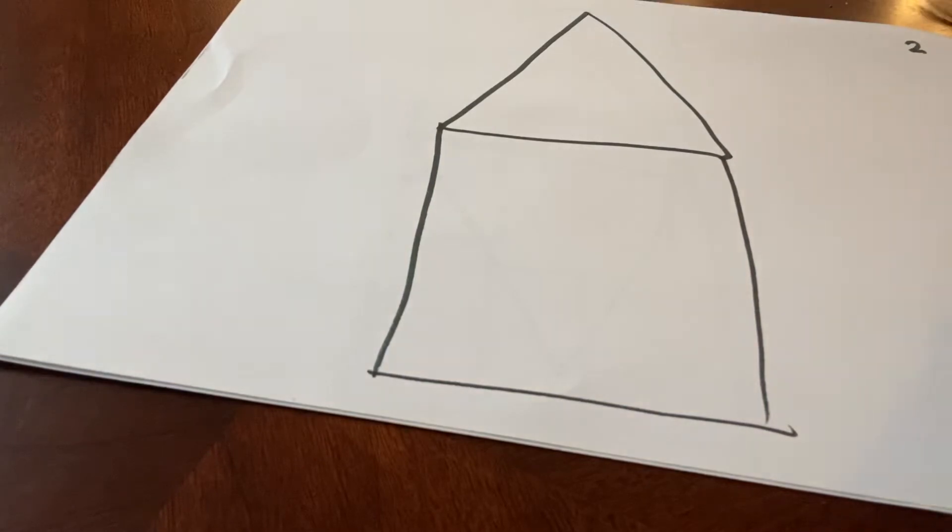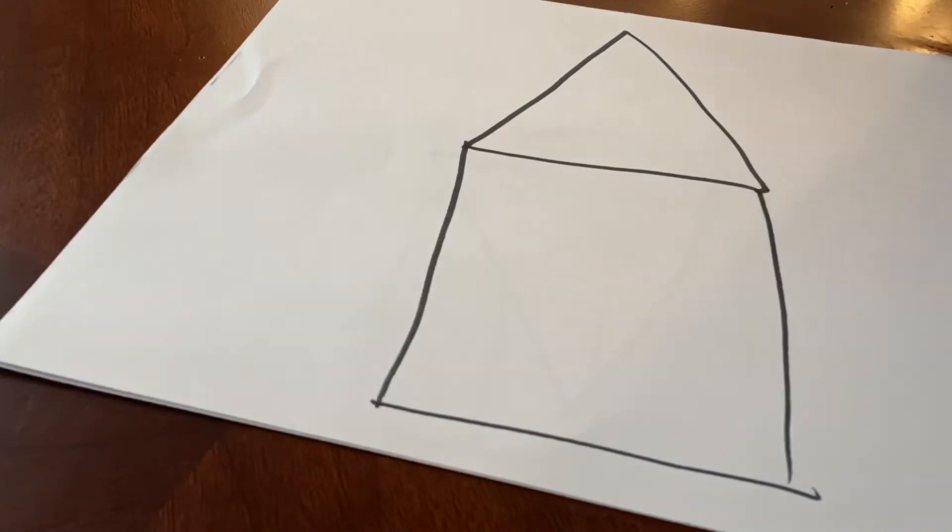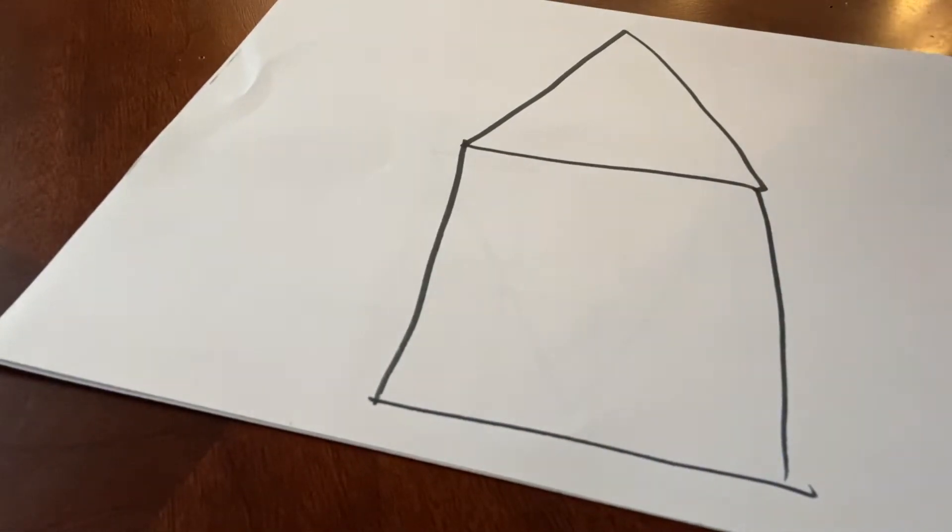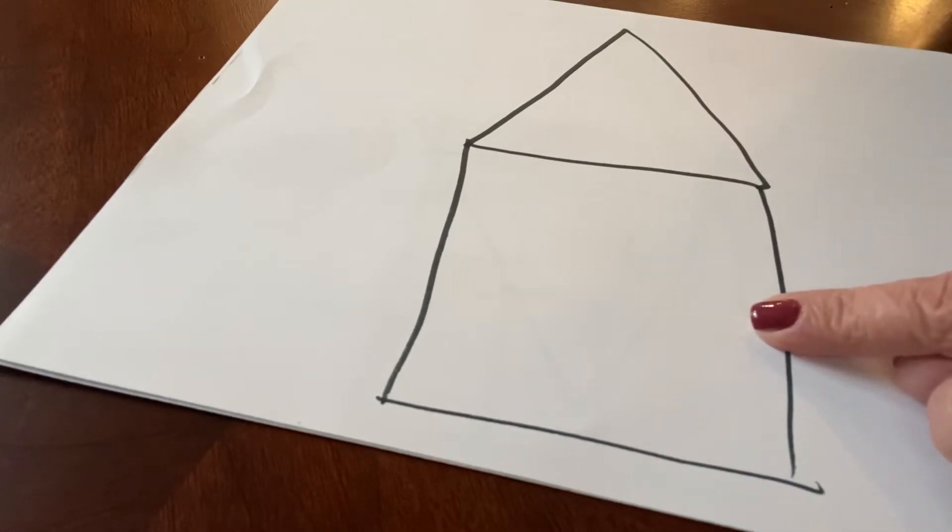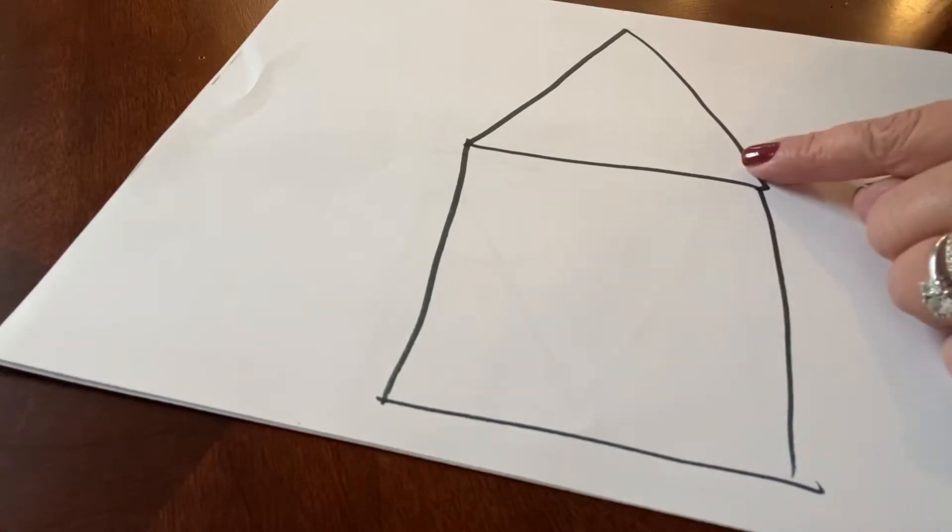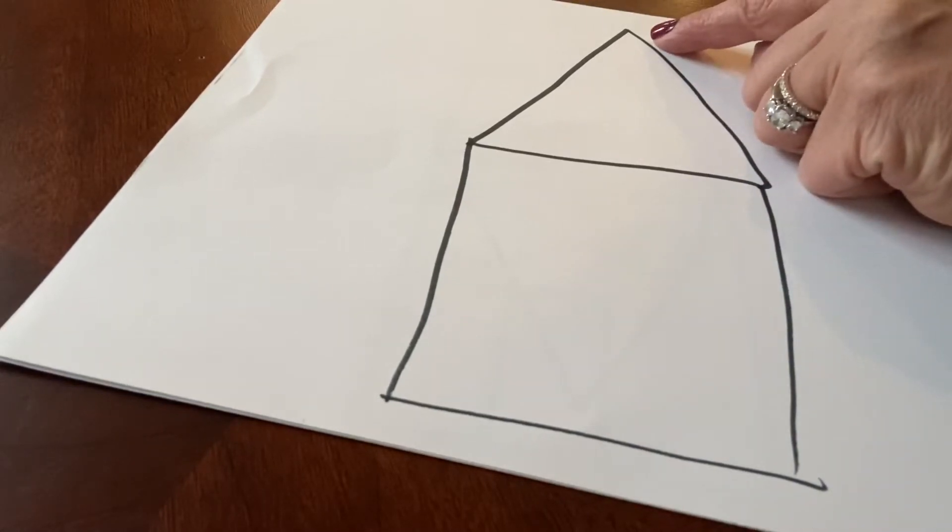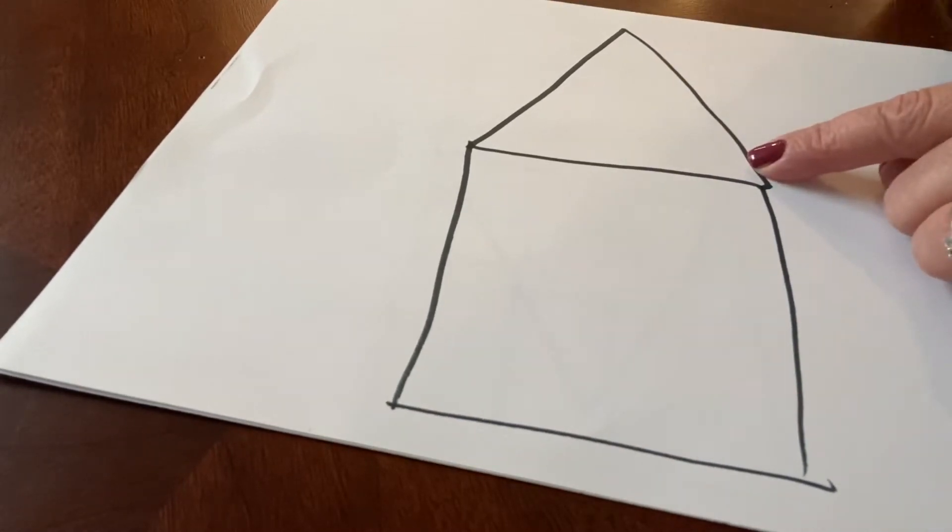So here we go, that's our one. Wow, now what do we have? We have the square. And what shape is this with a point at the top? I'll give you a hint. It looks like a mountain, remember? It's a triangle.